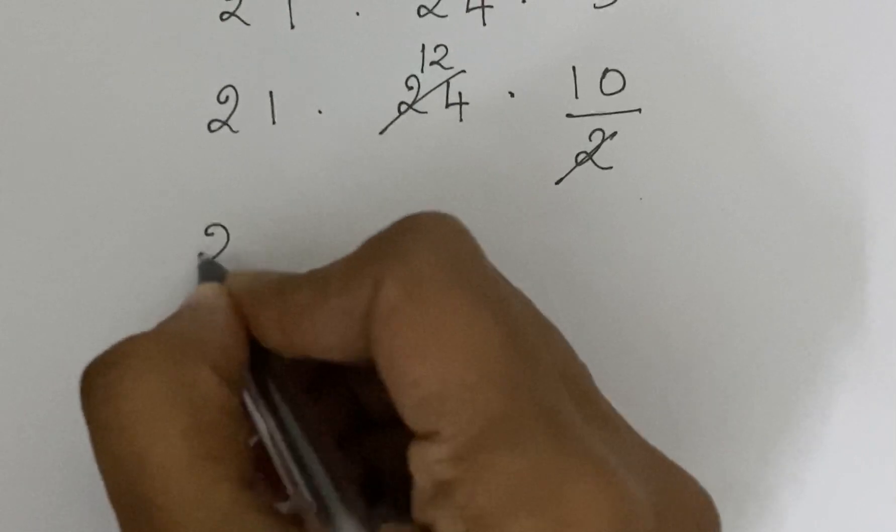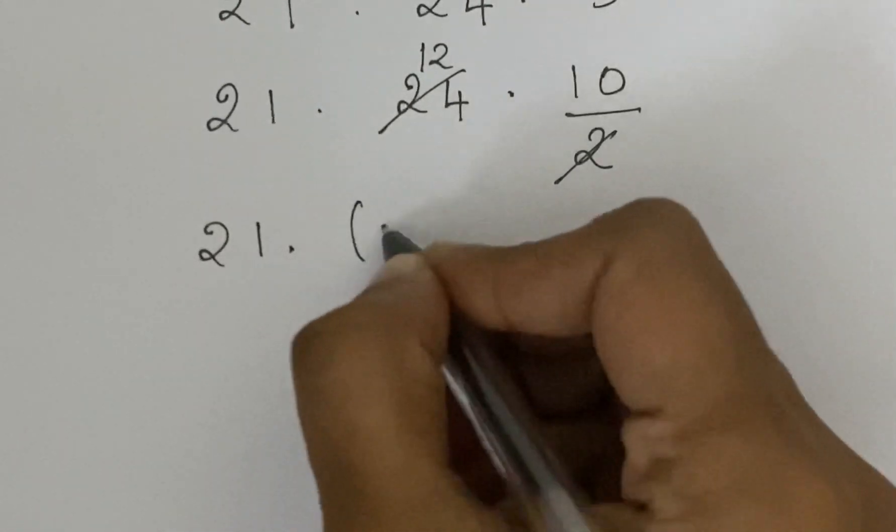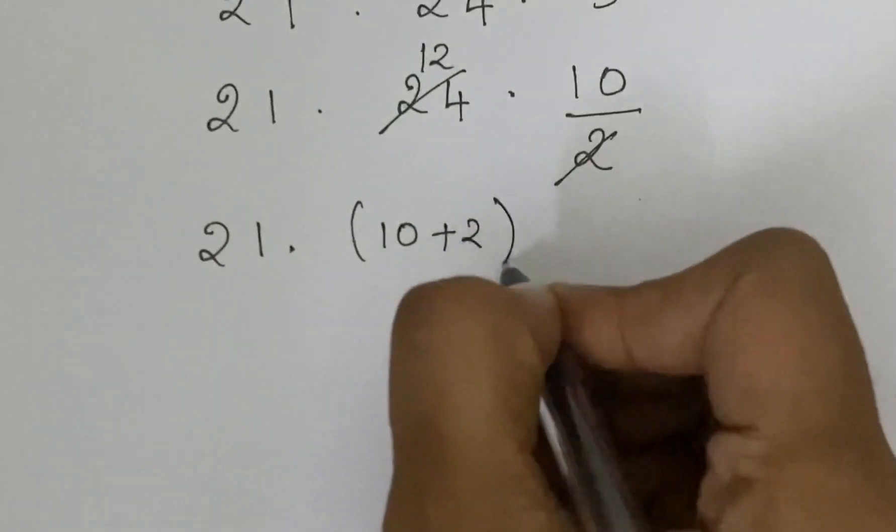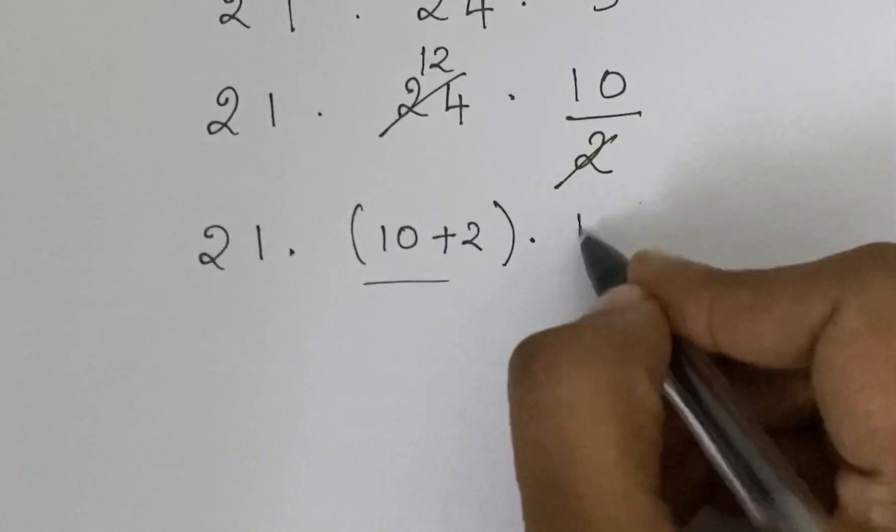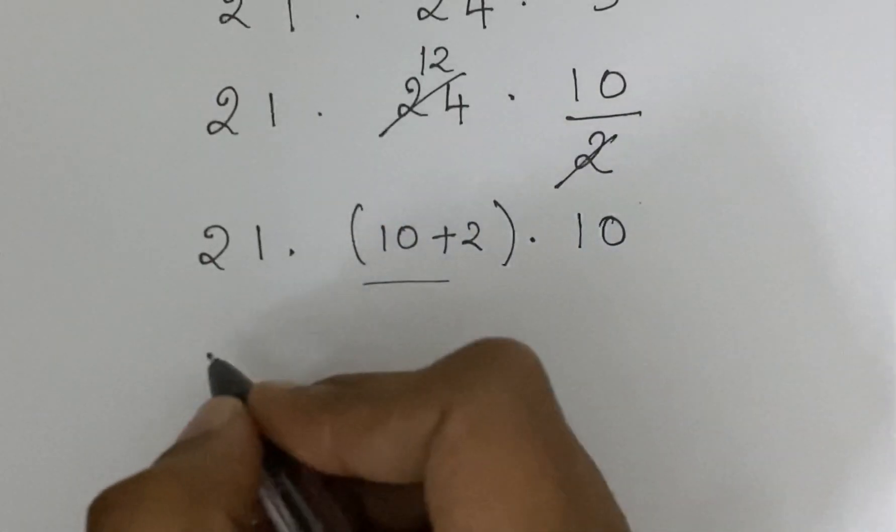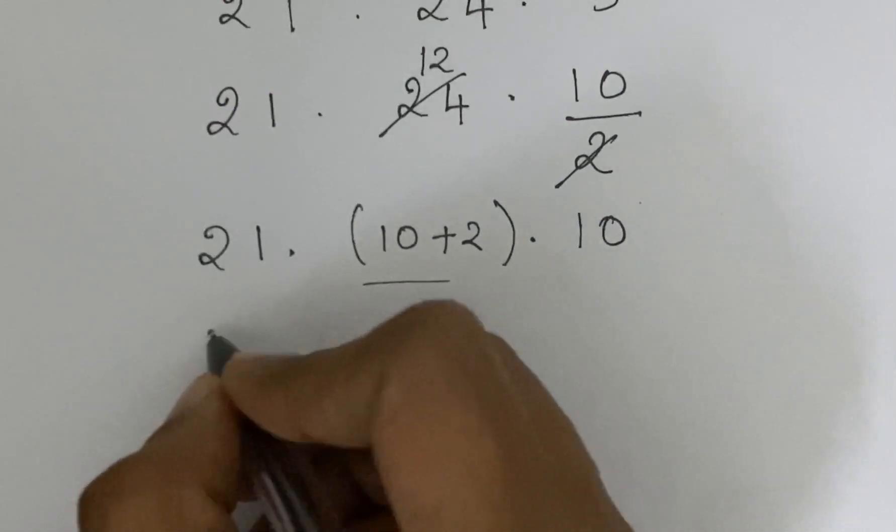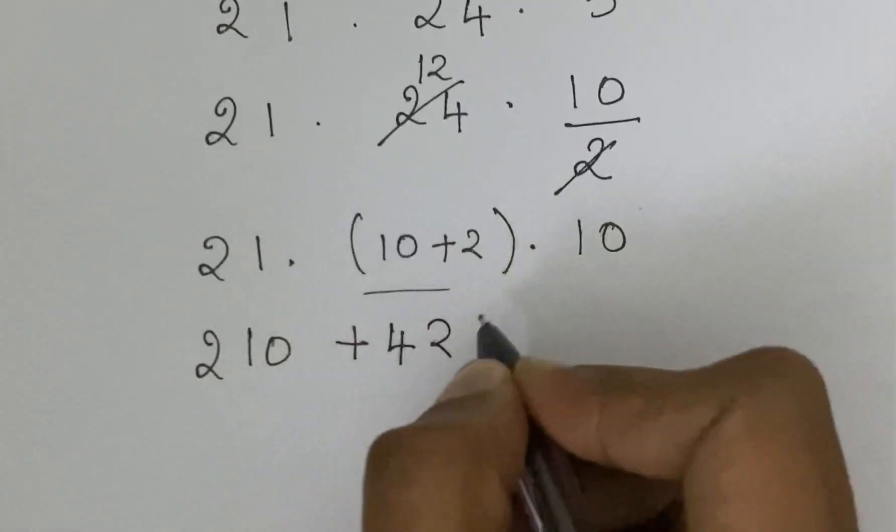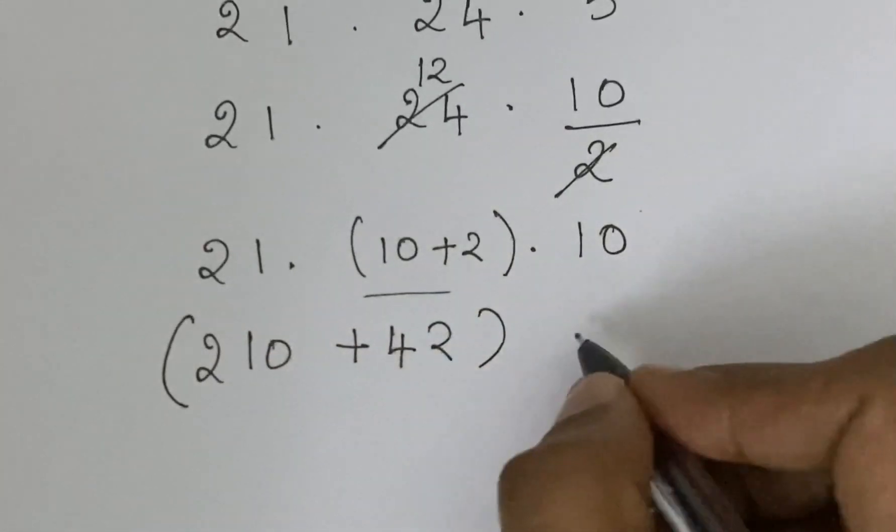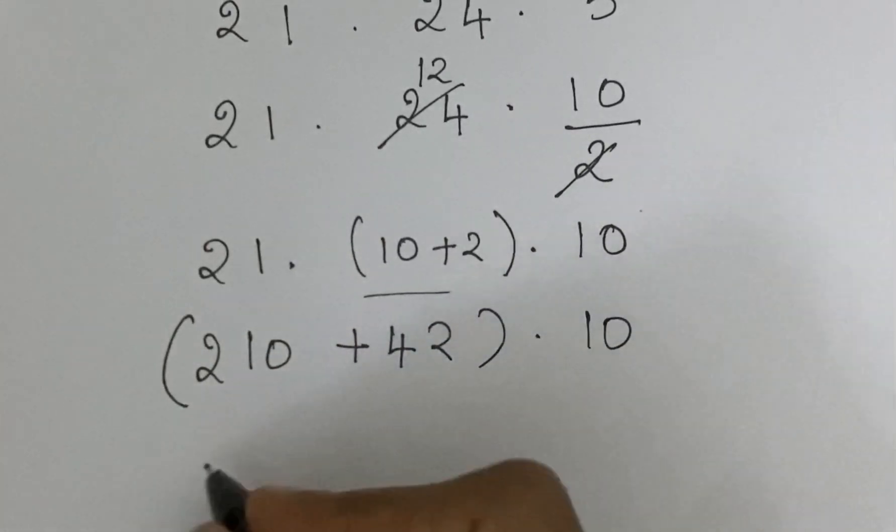We have 21 times 12. 12 can be written as 10 plus 2 times 10. 21 times 10 is 210 plus 21 times 2 is 42 times 10.